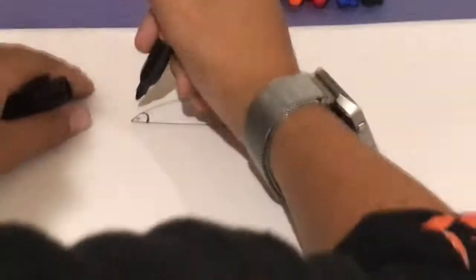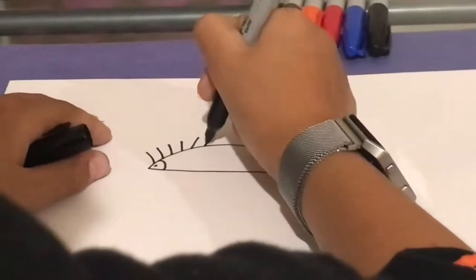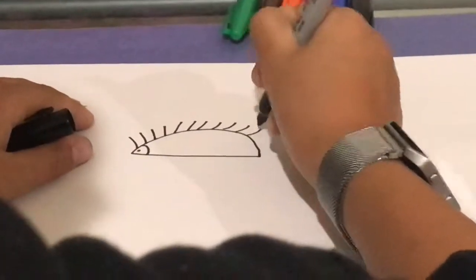And then just like a ton of spikes down the back here. You can make them a little like curve so they look more realistic.